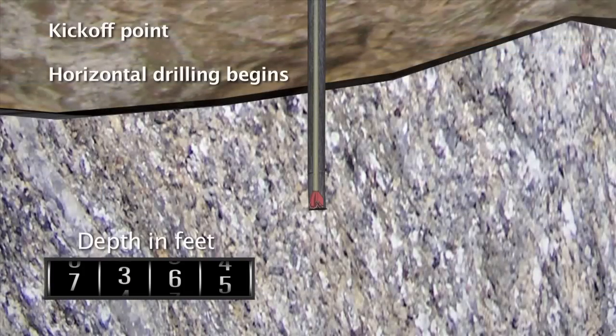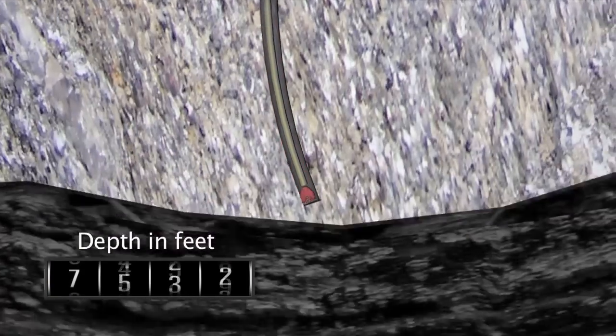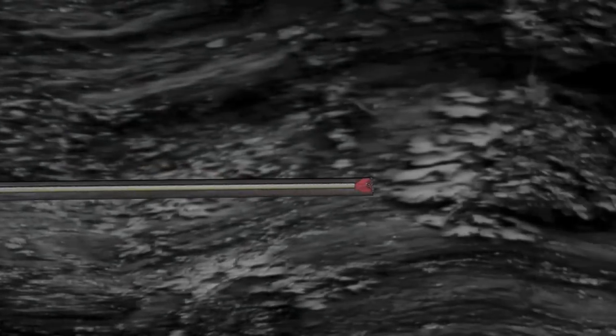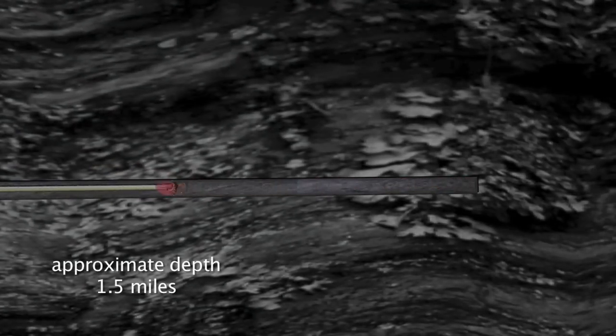At this point in the drilling process, numerous layers and thousands of feet of impermeable rock separate the freshwater aquifers and ground's surface from the end of the well bore.